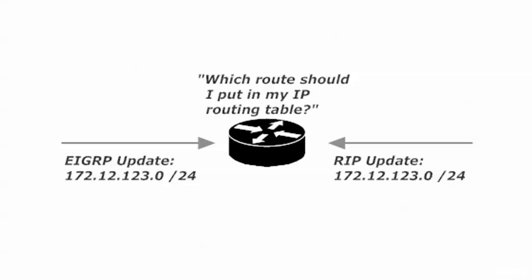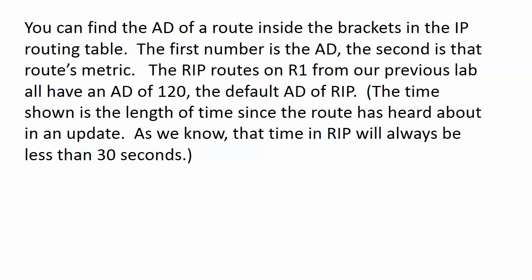Administrative distance is really a question of believability. That's just like if two people told you what the weather was going to be today. You get dressed at 6 in the morning: one weather person says it's going to be sunny and 80, and the other person says it's going to snow. One of those weather people is really, really wrong, but you still have to make a choice. It comes down to believability, and that's exactly what this is. The router has to decide who's more believable — EIGRP or RIP — and that's where admin distance comes in.